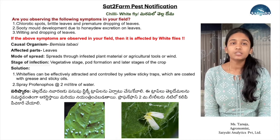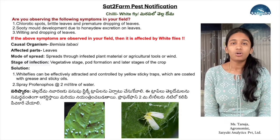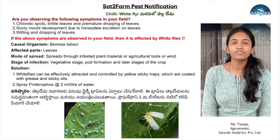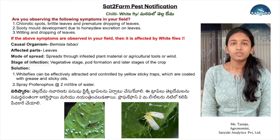This insect spreads through wind, through infected plant materials, or through agricultural tools. It usually affects the plants during the vegetative growth stage or during the pod formation stage through the later stages of plant growth.